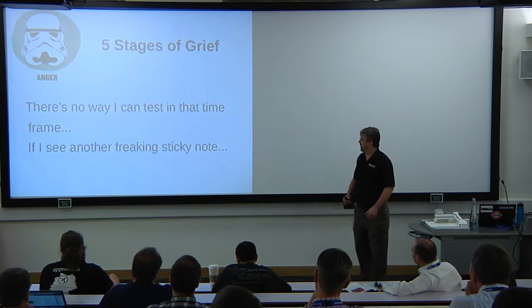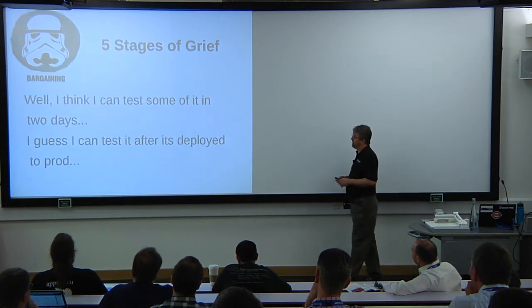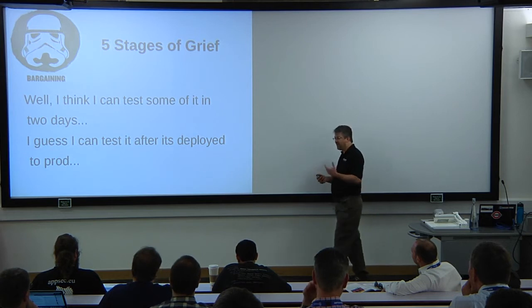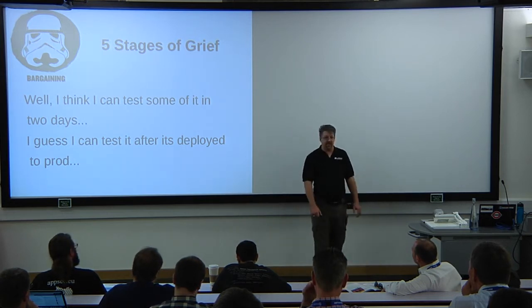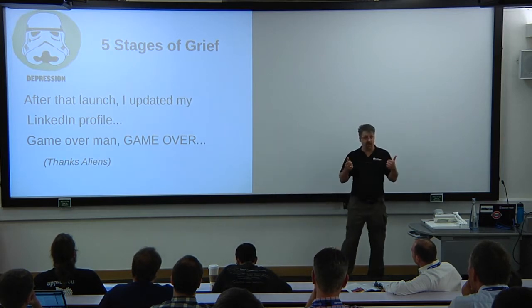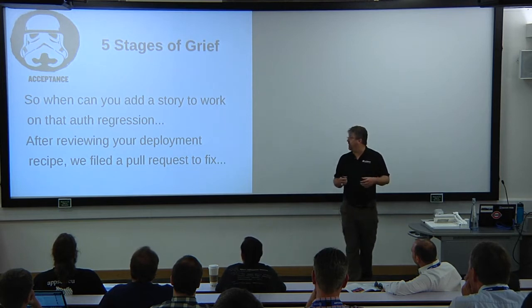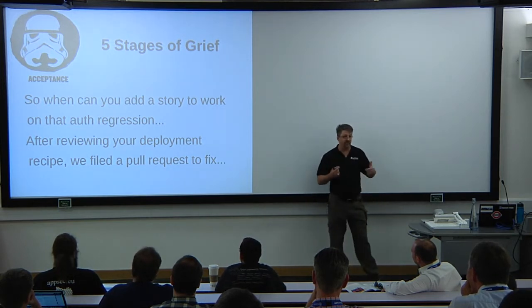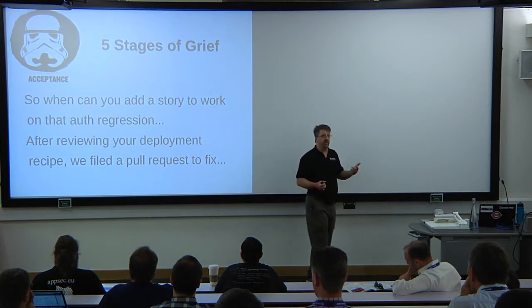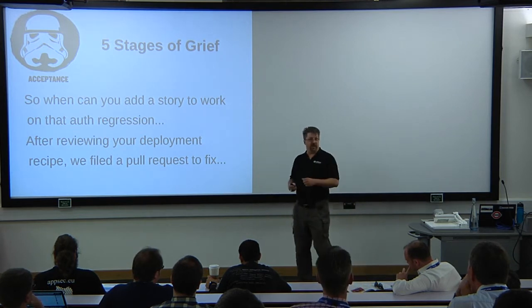Then bargaining — I can test two things in two days, trying to convince management to give me a little more time. Then depression — after that launch I'm going to go update LinkedIn. And then from Aliens: 'Game over, dude.' And then acceptance — now you start actually talking with the developers and you say, I need you to work in a story to get this regression on the login thing into the next sprint. Or: I looked at your deployment recipe and found some things you were missing — you really should put root no-login for SSH, here's a pull request, just add that into your Puppet or Chef. We're done. That's kind of where you need to get.